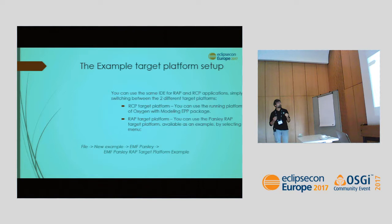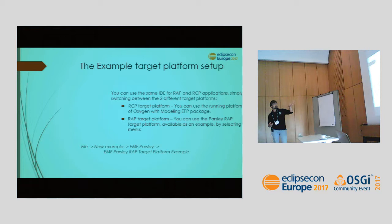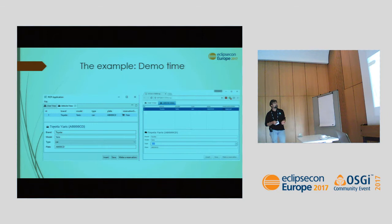For the RCP platform there's nothing special to do — you just use the running platform. For the RAP target platform you need to create a target, which you can do easily with File > New > EMF Parsley > EMF Parsley RAP Target Platform Example, and then materialize the RAP platform. So it's demo time.